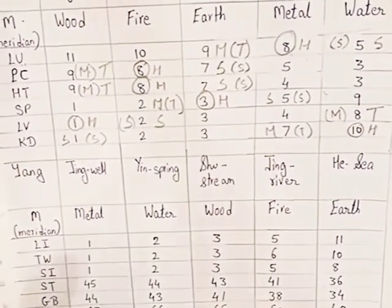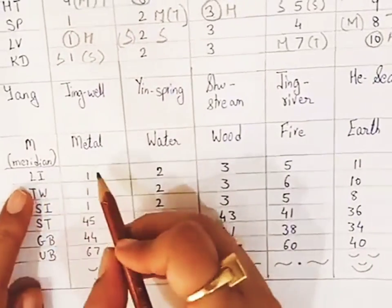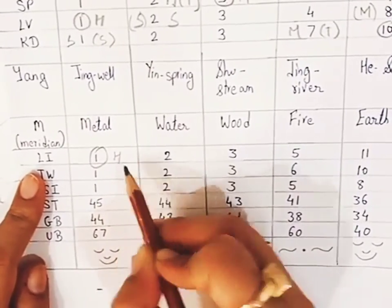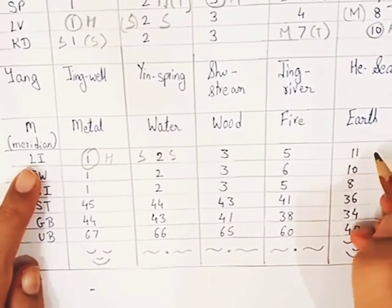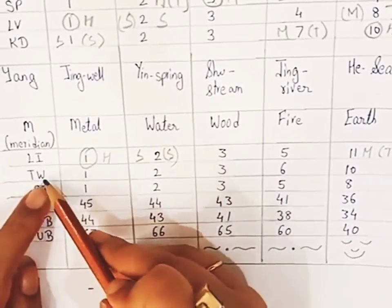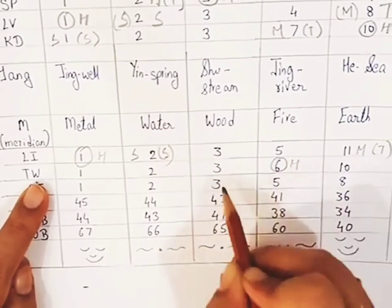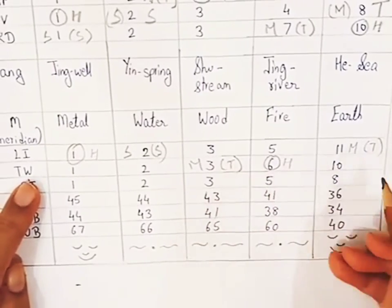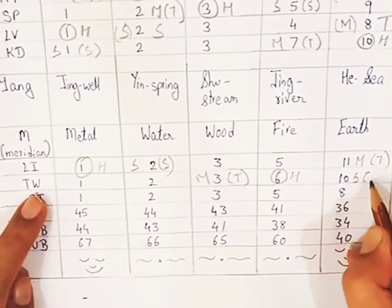From this chart, the yang meridians also give us the horary point, mother, and son point. Large intestine meridian is a metal element, so large intestine 1 is the horary point. Large intestine 2 is the son point or sedation point, and large intestine 11 becomes the mother point or tonification point. Triple warmer is a fire element, so the triple warmer fire point is the horary point. Triple warmer 3 is the mother point and can be used for tonification. Triple warmer 10 is the son point and can be used for sedation.